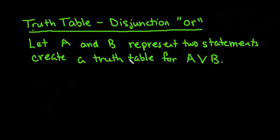And we're going to create a truth table that demonstrates the statement A or B. So this right here is always read as A or B.